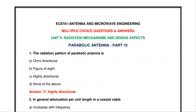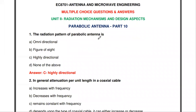Welcome to my channel. Today we are going to discuss objective type questions from the antenna topic - parabolic antenna, that is the reflector antenna. The first question: the radiation pattern of the parabolic antenna is (a) omnidirectional, (b) figure of eight, (c) highly directional, (d) none of the above. The radiation pattern of the parabolic antenna is highly directional.